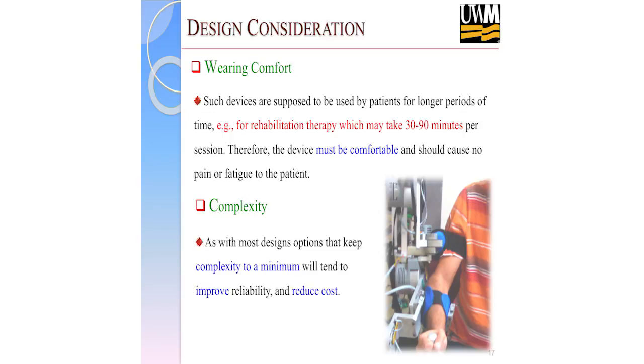Wearing comfort and ergonomic design are also essential, because the robot will be used for long sessions — 30 to 90 minutes or more. Regarding complexity, we sometimes need to make assumptions. The shoulder joint has three degrees of freedom, but we can simplify the mechanical design so it can serve the purpose without being too complex. Too many moving parts are hard to control. We need to make trade-offs.